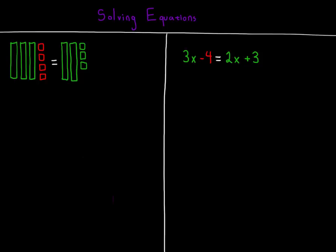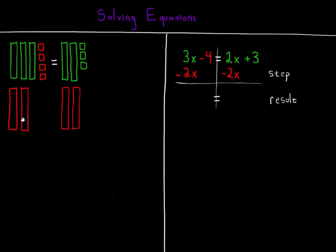In this example, I'm going to start by adding the opposite of 2x to both sides of the equation. Here you can see I've added two red bars to each side of the model. And on the equation side, I've subtracted 2x, because subtracting 2x is adding the opposite.